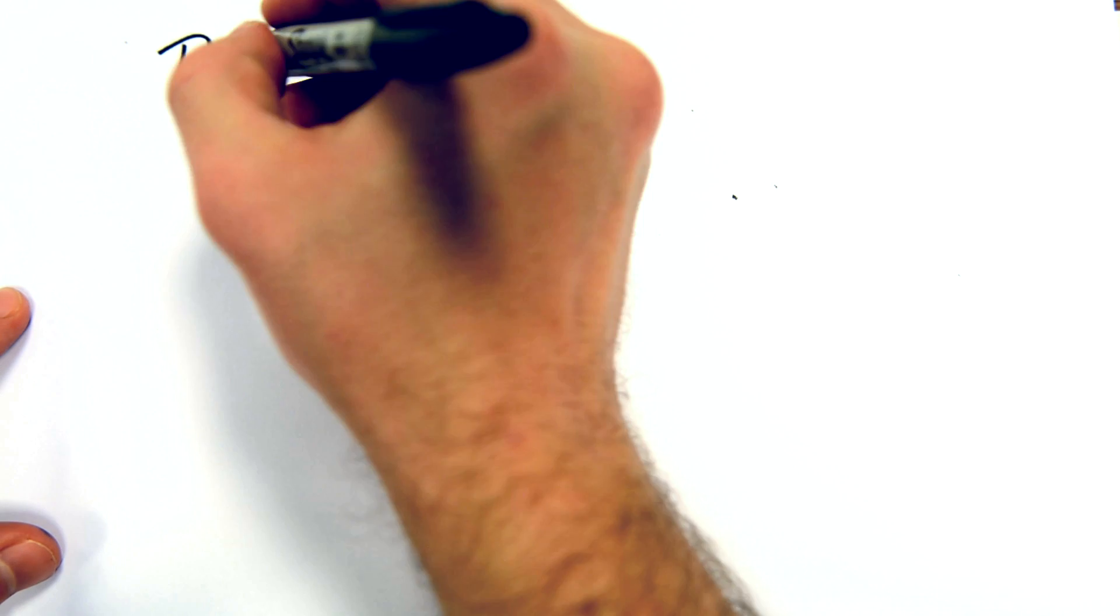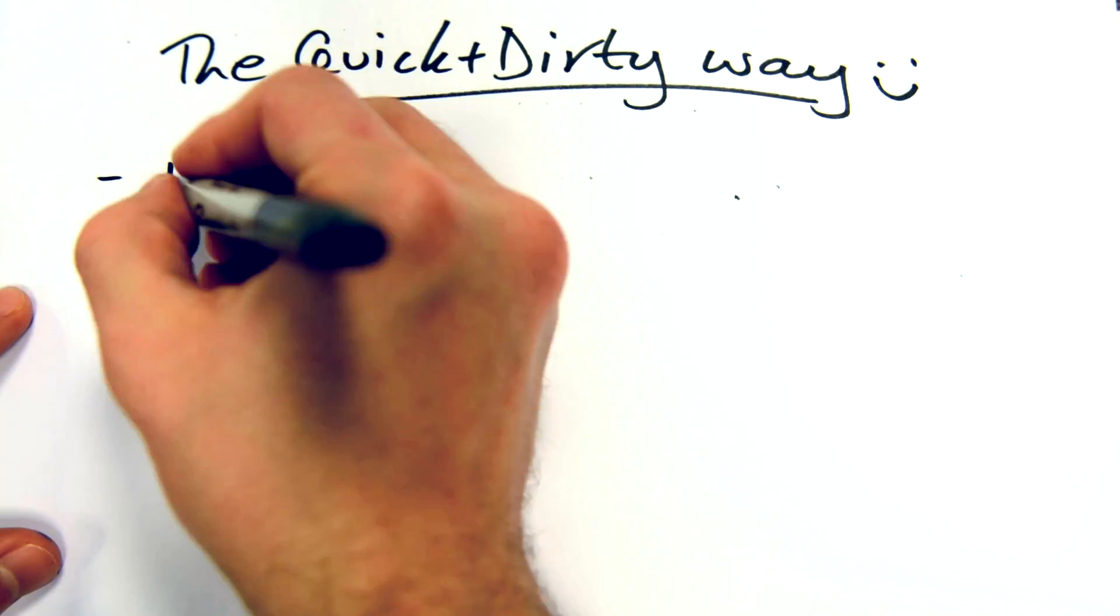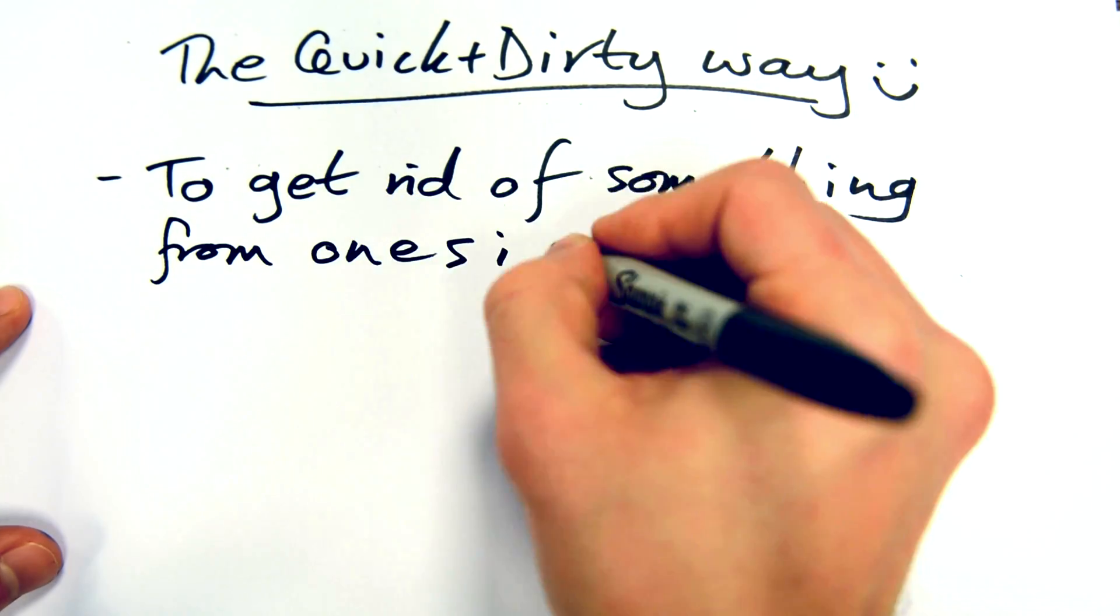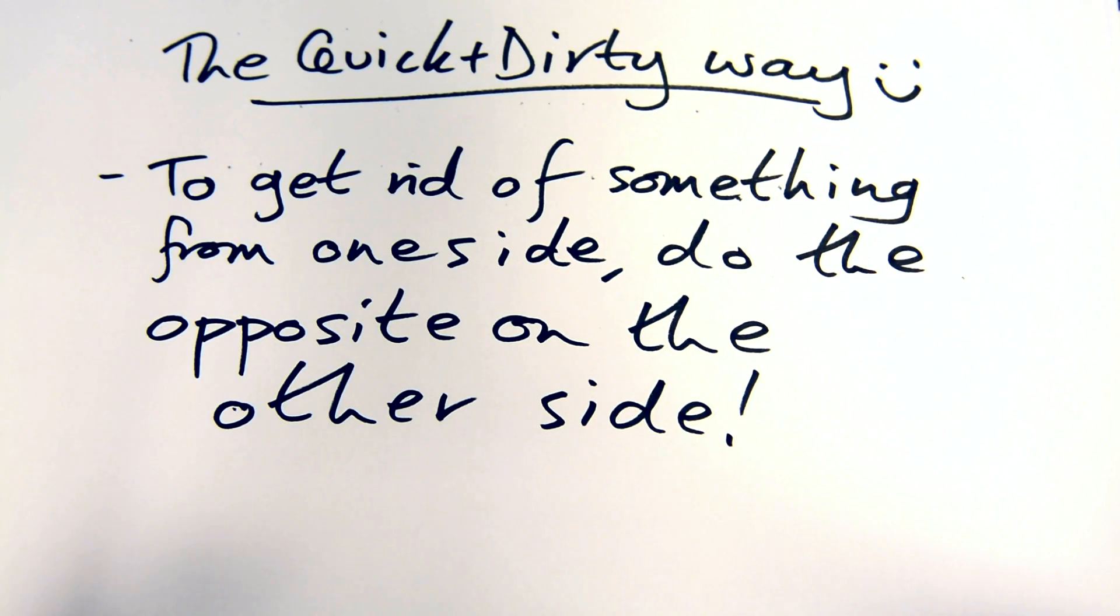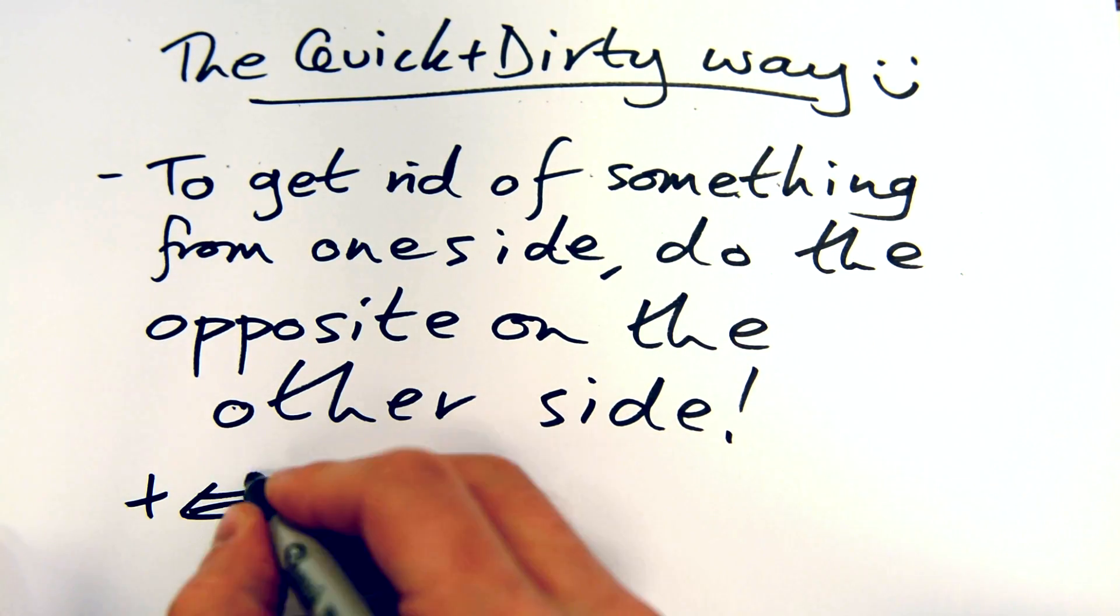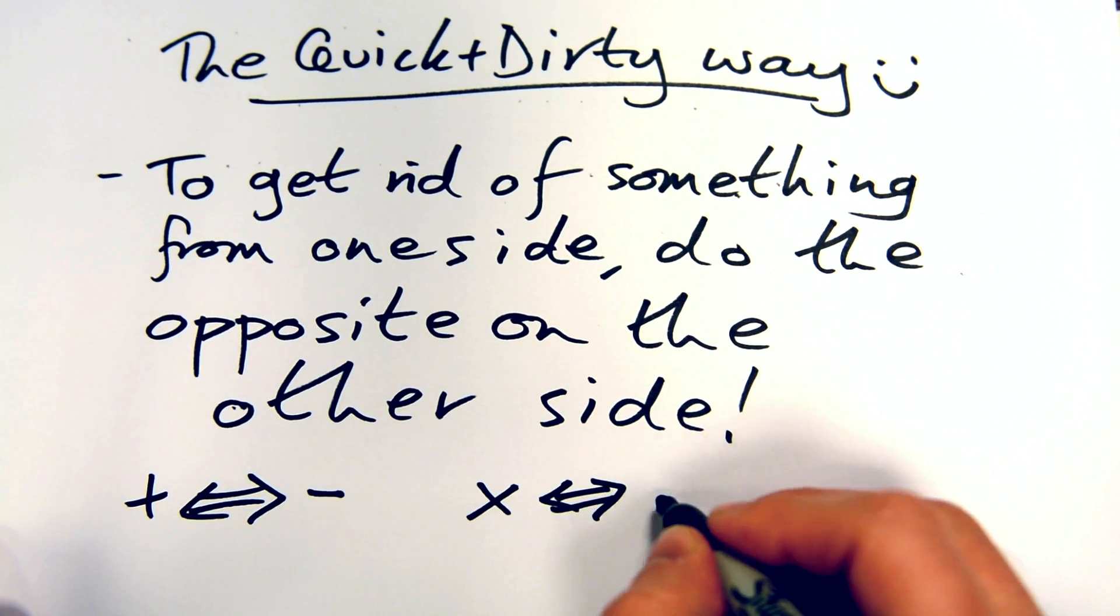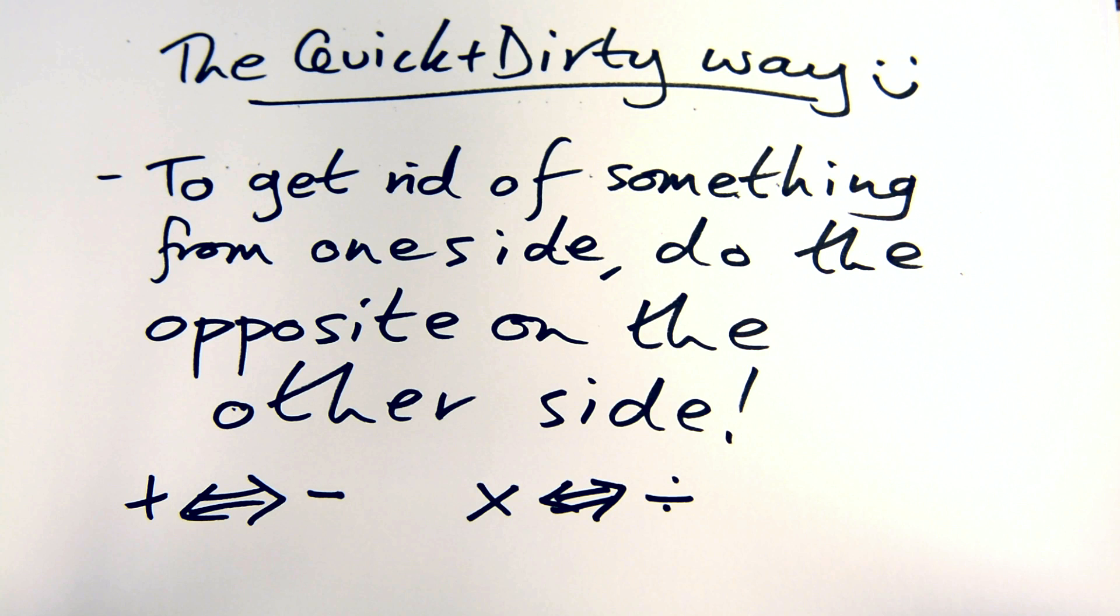If that seems a little bit long-winded, there is a quick and dirty shortcut you can take. To get rid of something off one side of an equation, all you have to do is do the opposite with it on the other side. So if it's being subtracted on one side, add it on the other, and vice versa. If it's being multiplied by on one side, divide by it on the other, etc.